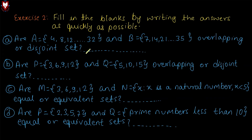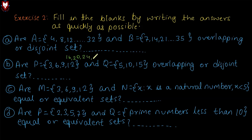From the overlapping definition, at least one element must be common. Looking at set A, the multiples of 4 up to 32 include 28 and 32.